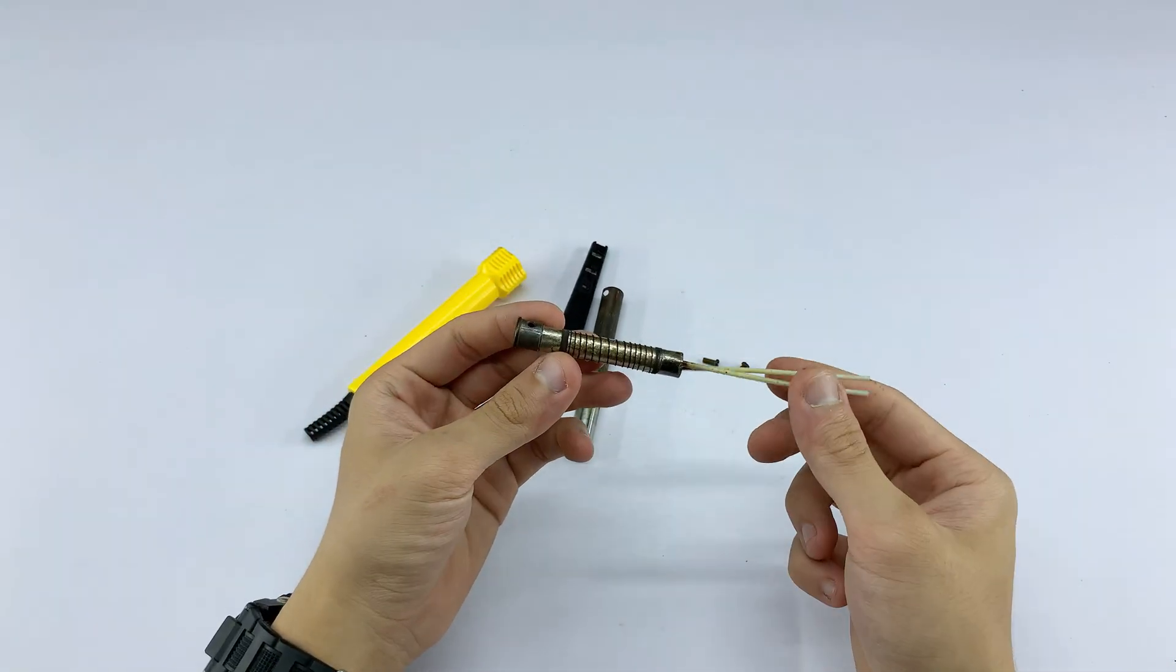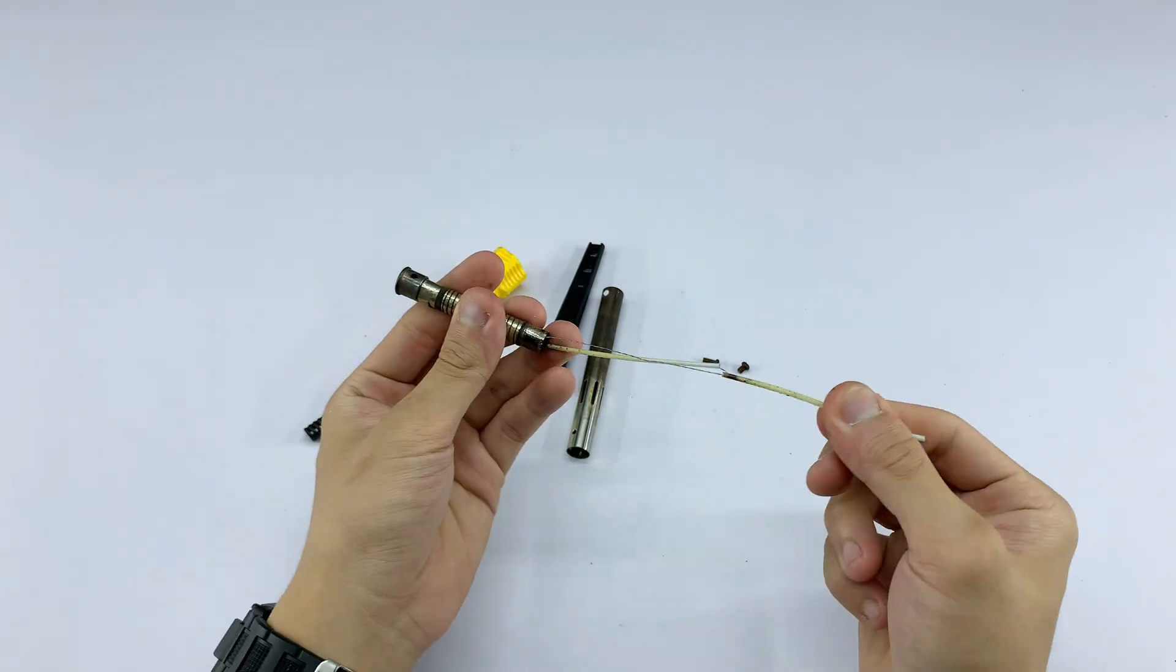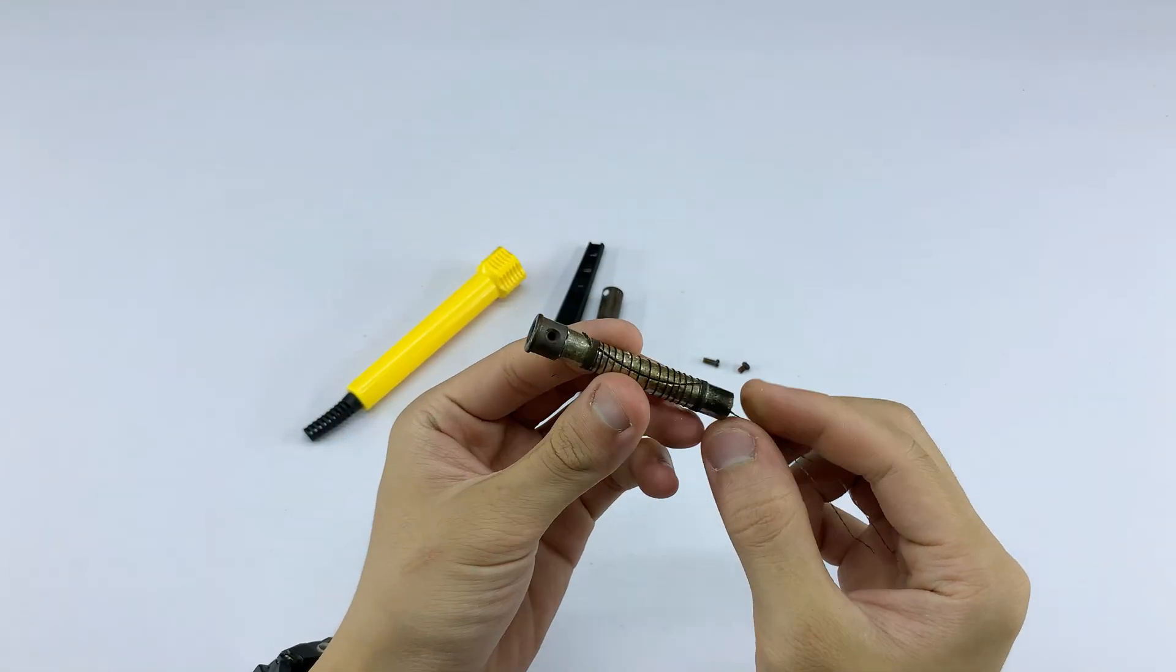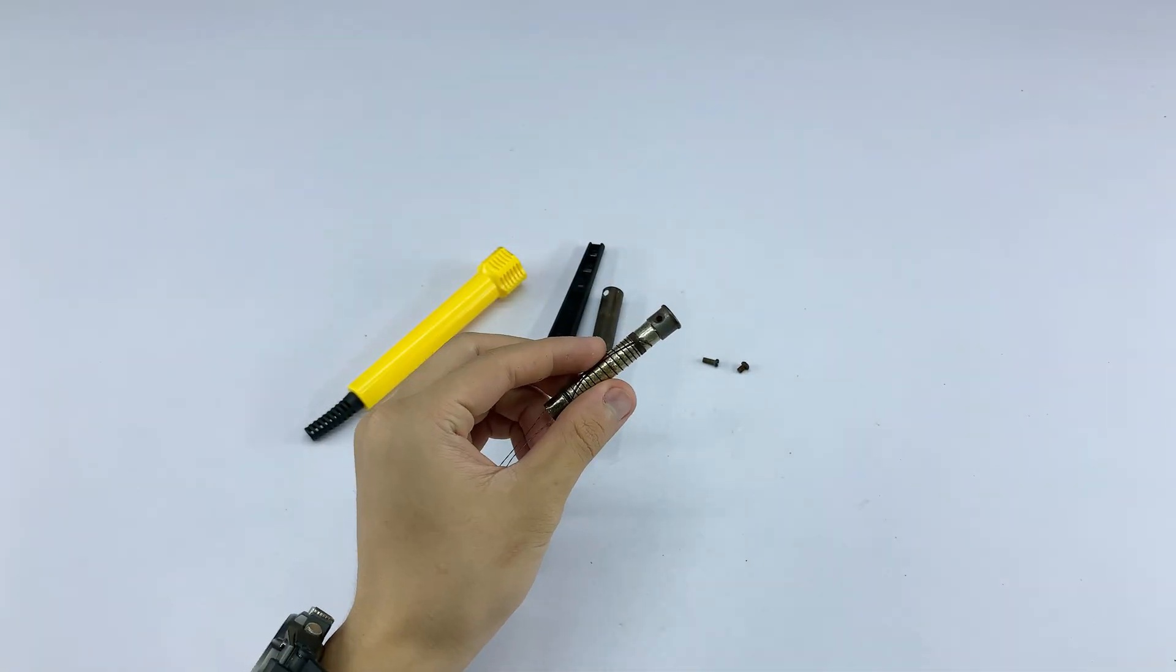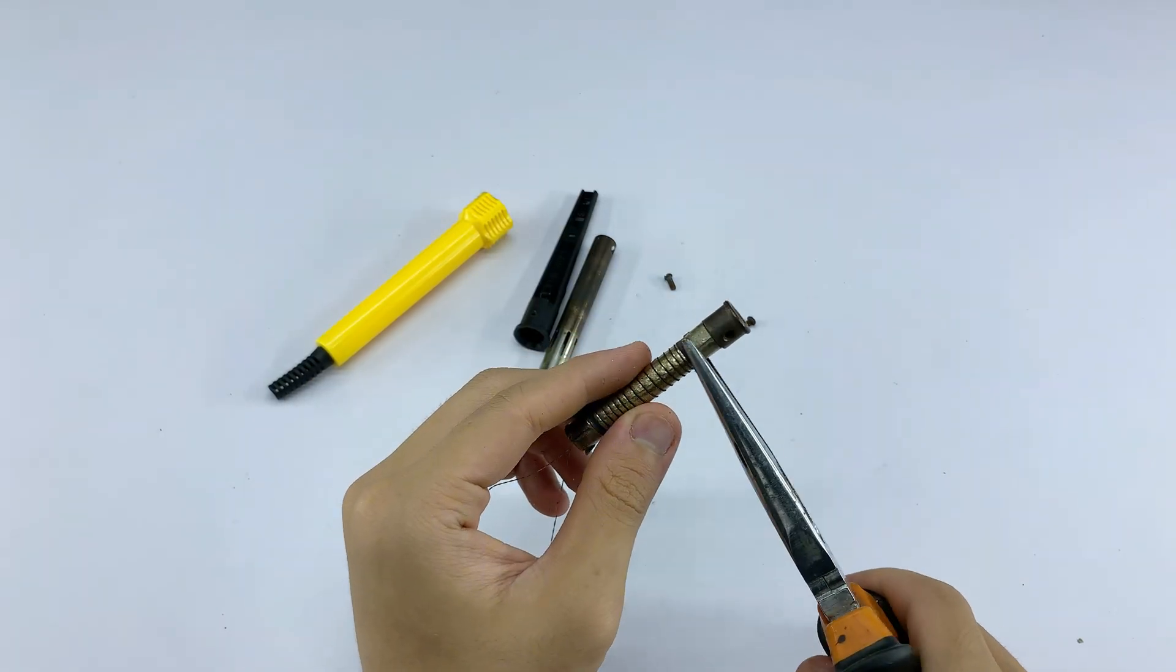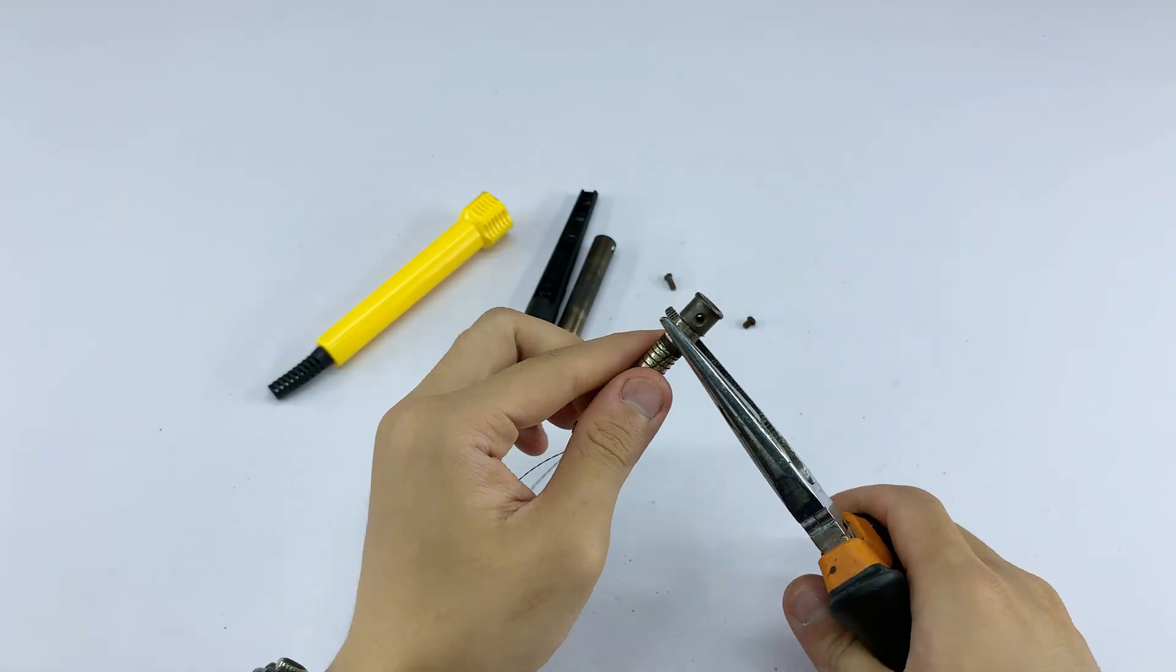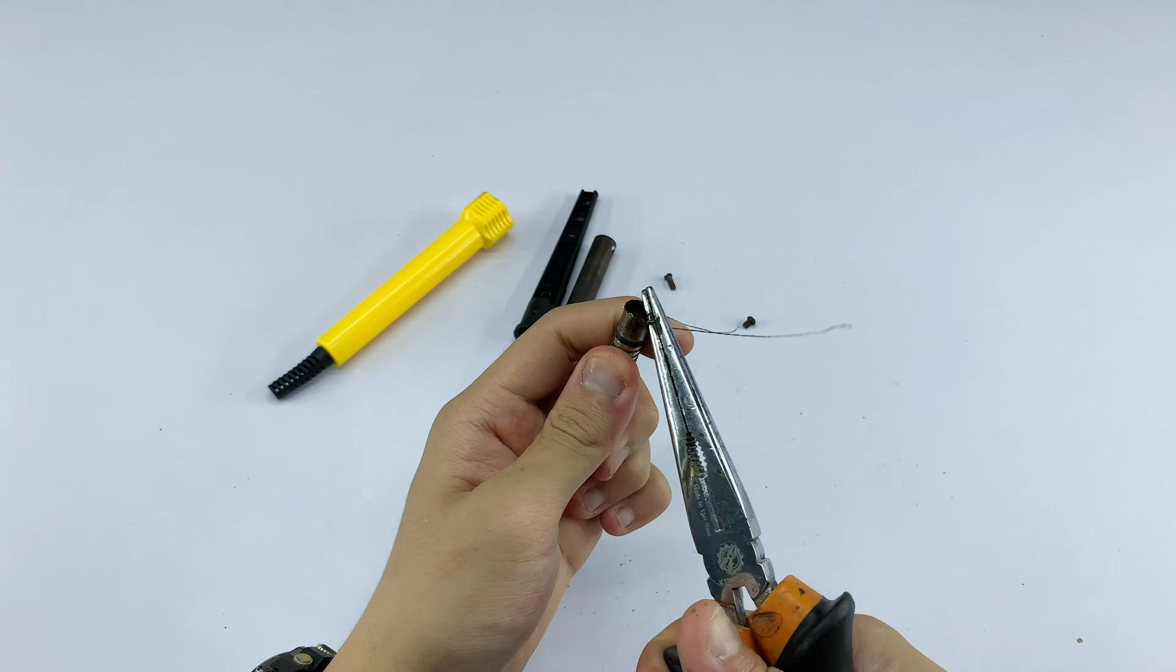I'm moving on to dissecting the metal component from the soldering iron. It has a complex internal structure with a coiled wire, which I'm carefully unscrewing and separating. Using pliers, I'm carefully breaking down this metal piece. You can see the fine internal wires and fragments being revealed as I work.